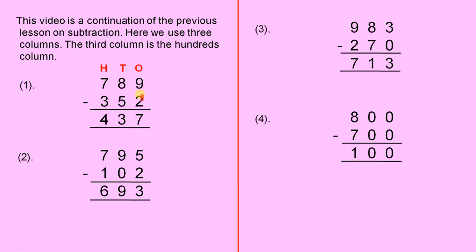the tens column and the hundreds column. And again, make sure all the numbers are perfectly lined up in each of the columns and the rest of it is quite straightforward. 9 take away 2 is 7, 8 take away 5 is 3, and 7 take away 3 is 4, so the answer is 437.